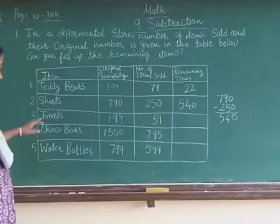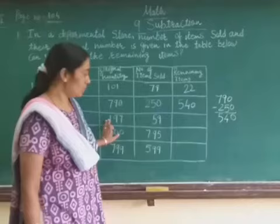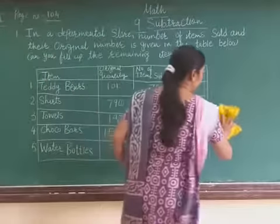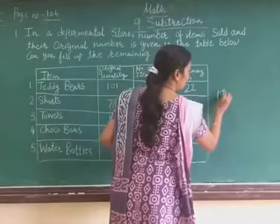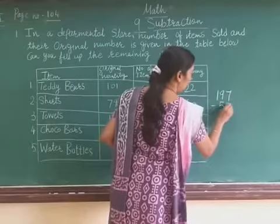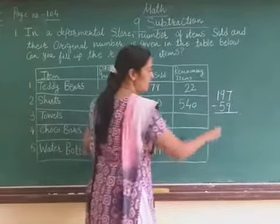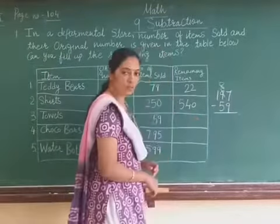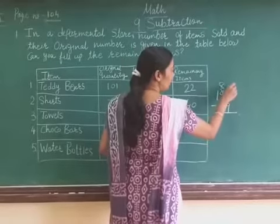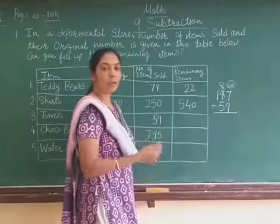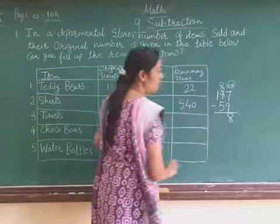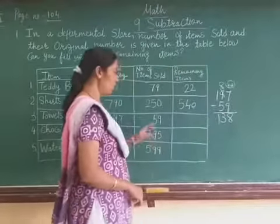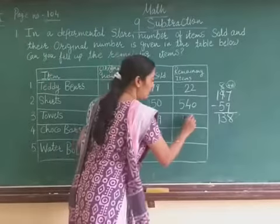The next item is tables. Tables: 197 minus 59 sold. Now we find the difference. 7 minus 9 is not possible, so we do regrouping. That gives 9 minus 1 is 8, and on the 1's place, plus 10, so 10 plus 7 is 17. 17 minus 9 gives 8. Then 8 minus 5. On the 100's place, 1 remains. So the remaining tables are 138.